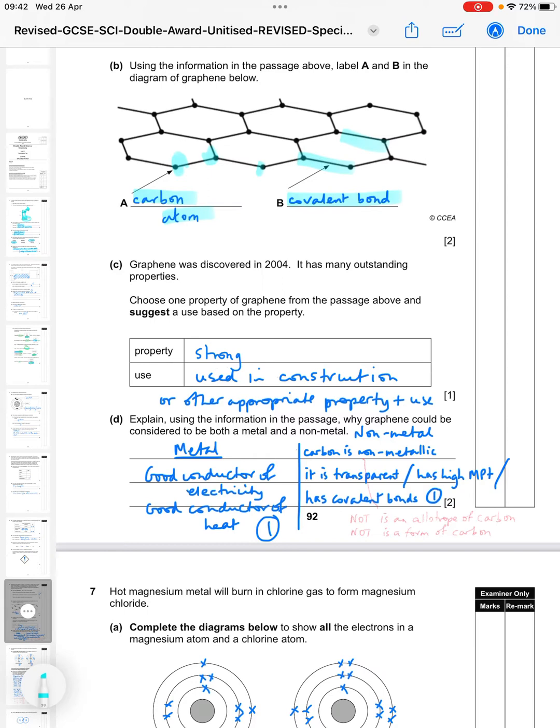Graphene was discovered in 2004. It has many outstanding properties. Choose one property of graphene from the passage above and suggest a use based on the property. So any appropriate property and use - if you've picked something and given a use for it based on that property, you will get a mark. The example in the mark scheme was the property is strong, so it can be used in construction. Then explain using the information in the passage why graphene could be considered both a metal and a non-metal. What I've done here is just separated the answer into metal and non-metal. So for a metal, it's a good conductor of electricity and a good conductor of heat.